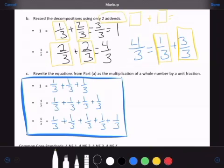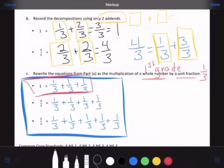Part C says rewrite the equations from part A. So I put the part A equations in for us. Rewrite the equations from part A as the multiplication of a whole number by a unit fraction. So our unit fraction is still going to be one third because that's what this problem is using. A whole number means you use like your first grade numbers like one, two, three, those kinds of numbers. So looking at this part, how many times did I write one third? That's right. We wrote one third three times.